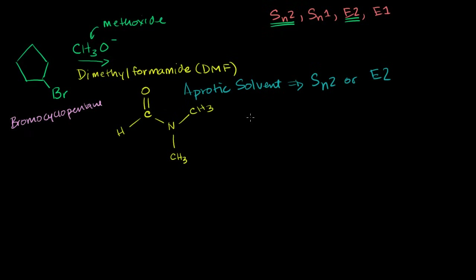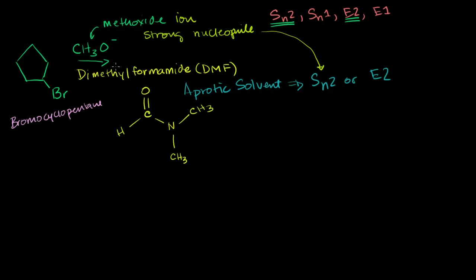Our mind is already thinking SN2 or E2. Now let's think about the reactants themselves. We have the methoxide ion — let's think about whether it's a strong or weak nucleophile. It's actually a pretty strong nucleophile, which would put us in the direction of SN2. So we have two data points for SN2. It's not too big a molecule, so it won't be hindered. But it's also an extremely strong base, even stronger than hydroxide, which implies we're going to have an E2 reaction as well.